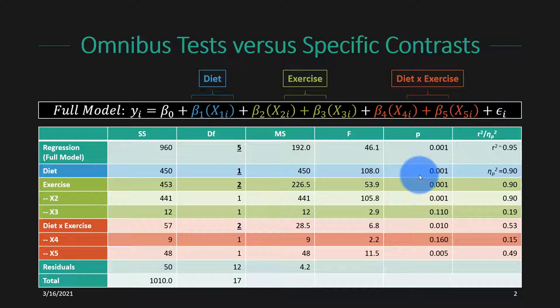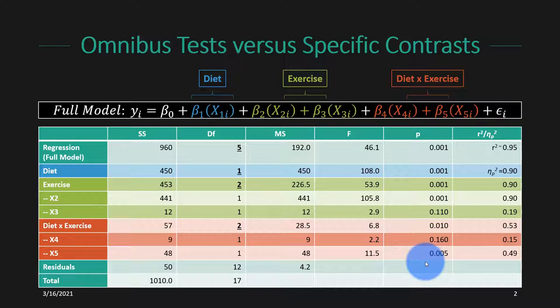Those F-values and p-values are very informative because they tell us about the probability of observing an effect that large or larger under the null hypothesis. But how big is that effect, and how much should we be concerned about it? Something might be statistically significant but very small if we have a big sample and a lot of precision. Statistical significance versus practical significance are things that often go together, but they don't necessarily go together.